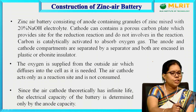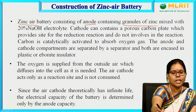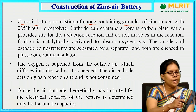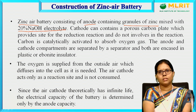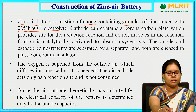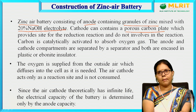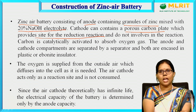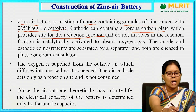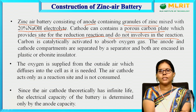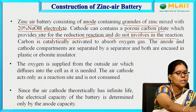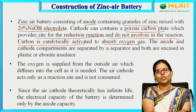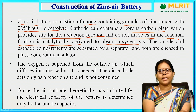The zinc-air battery consists of an anode of zinc granules mixed with 20% NaOH alkaline solution. The cathode contains a porous carbon plate, which provides the site for the reduction reaction where oxygen is reduced to hydroxide ions. The carbon does not participate in the reaction; it is catalytically activated to absorb oxygen. A catalyst is added on the carbon plate to absorb oxygen.